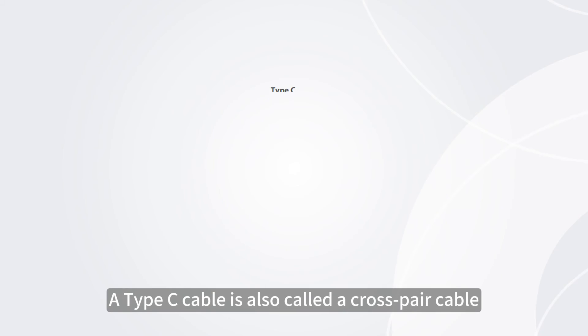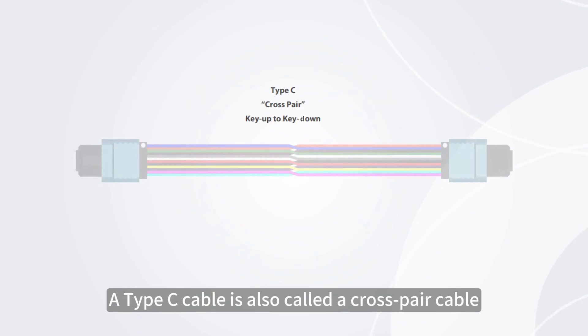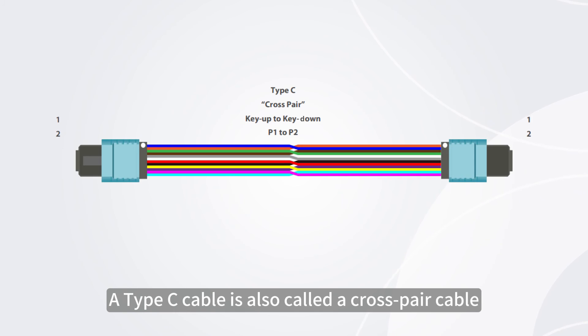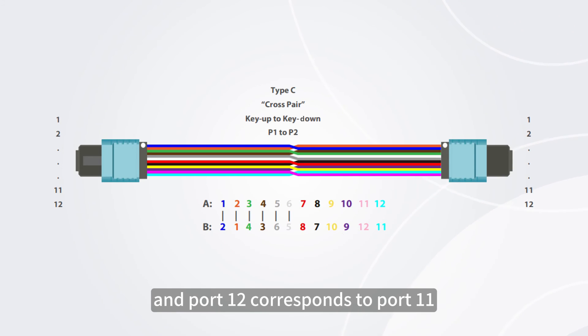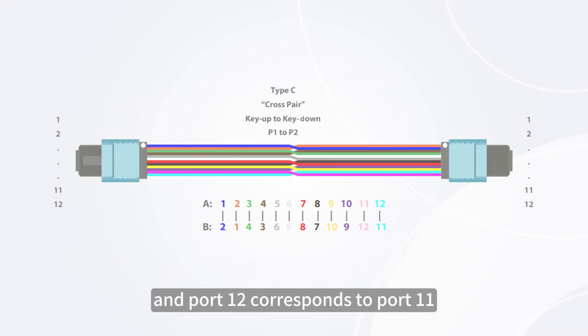A type C cable is also called a cross-pair cable. Port 1 of this cable corresponds to port 2, and port 12 corresponds to port 11.